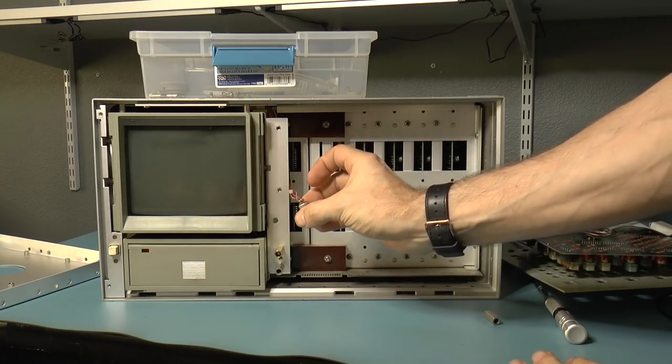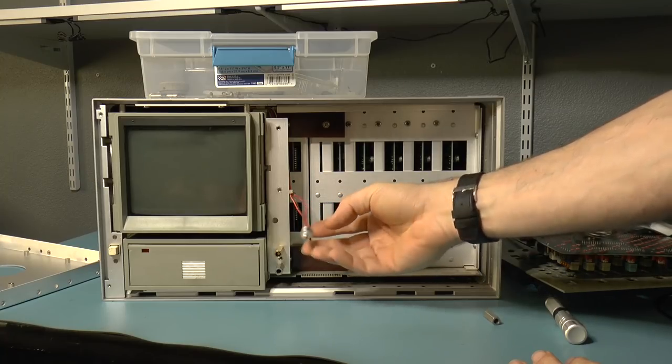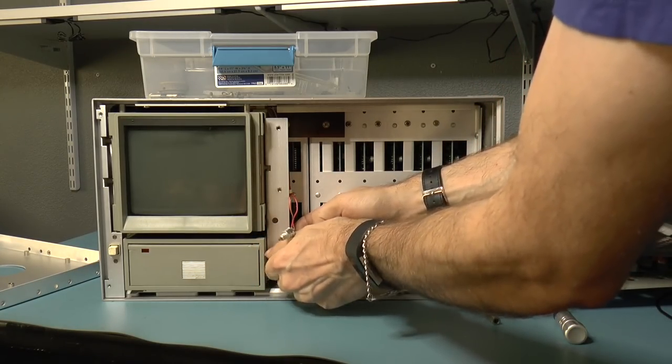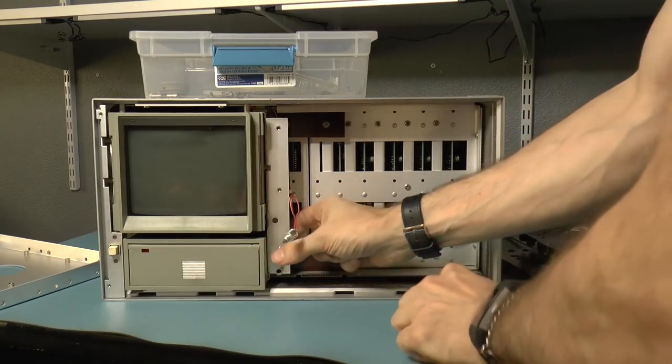I just need to desolder these connections and solder it to the replacement potentiometer. Hopefully we should get a nice smooth intensity control.